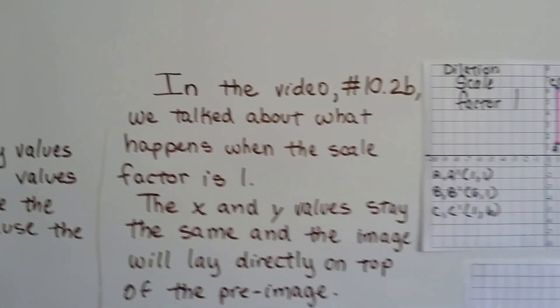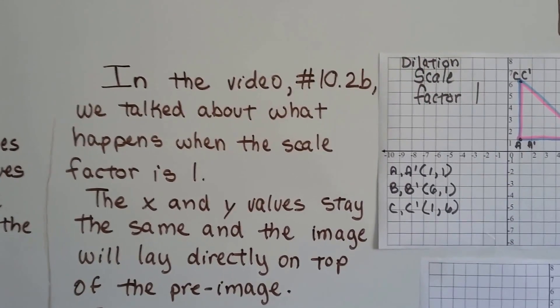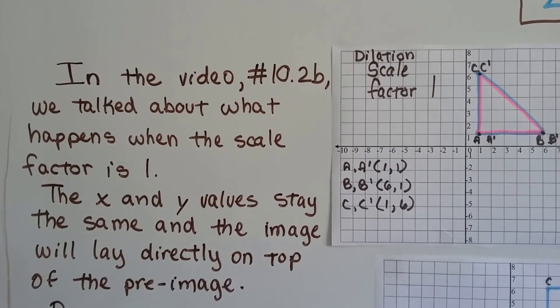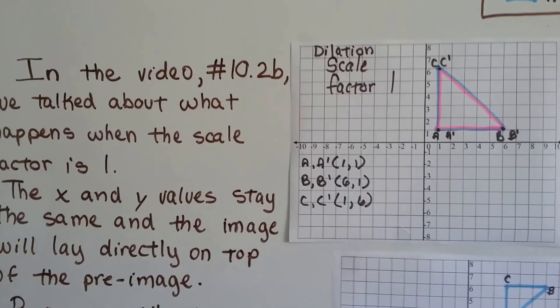Now in the video 10.2b we talked about what happens when the scale factor is 1. The x and y values stay the same and the image will lay directly on top of the pre-image.